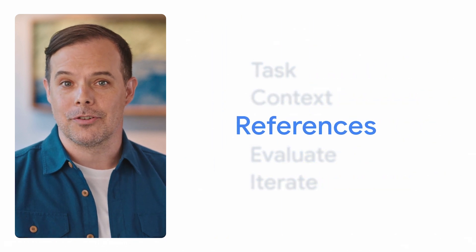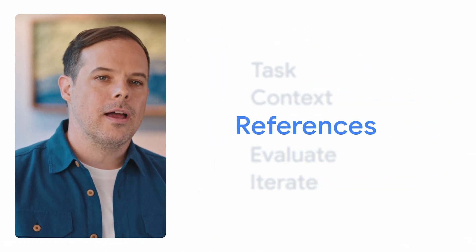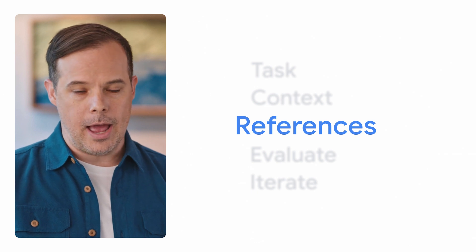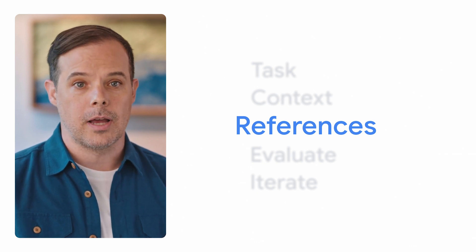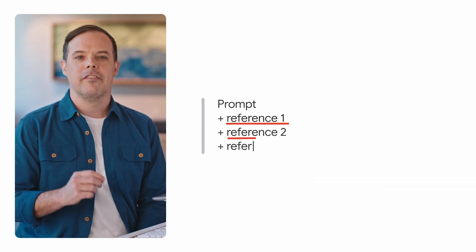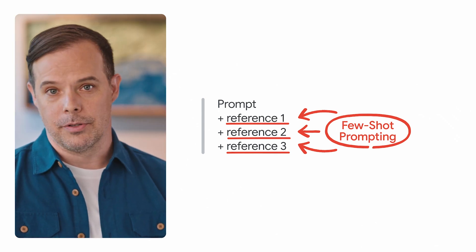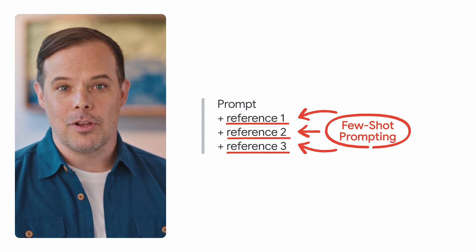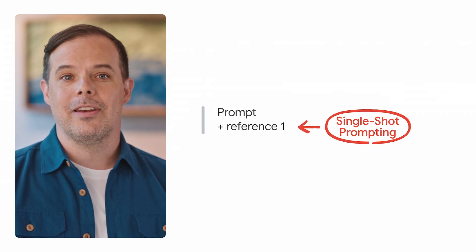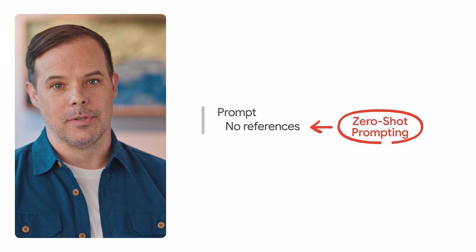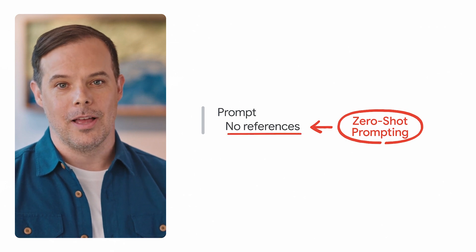So let's give references a try. References give Gen AI tools examples to work from, and that can mean asking a Gen AI tool to learn from the tone, style, or length of a given reference. Providing multiple references is also known as few-shot prompting — shots are just references or examples. There's also single-shot prompting, which means giving it one reference, and zero-shot prompting, which means we don't give the AI tool any references. Most of the time, between two and five references is the sweet spot. Too few references and we don't give enough context; too many, and we could skew the results and limit creativity.